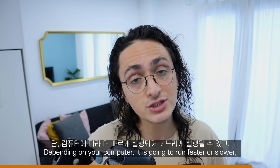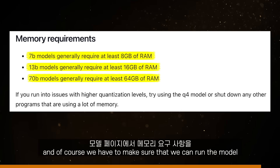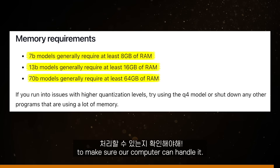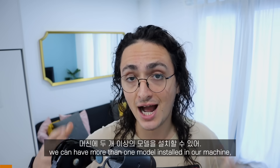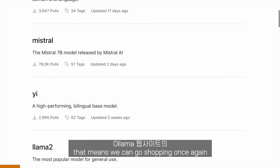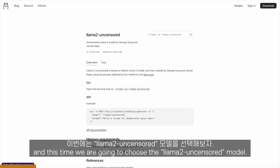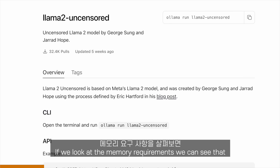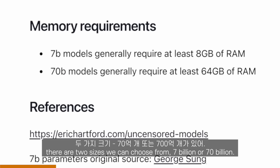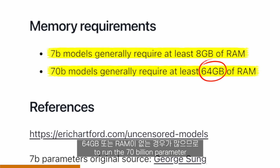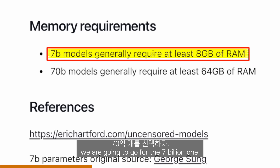Depending on your computer, it is going to run faster or slower. And of course, we have to make sure that first we can run the model by checking the memory requirements on the model page to make sure our computer can handle it. Because Ollama is awesome, we can have more than one model installed on our machine. That means we can go shopping once again on the models page of the Ollama website, and this time we are going to choose the Ollama Uncensored Model. If we look at the memory requirements, we can see that there are two sizes: 7 billion or 70 billion. Because we don't have 64 gigabytes of RAM to run the 70 billion parameter model, we are going to go for the 7 billion one.